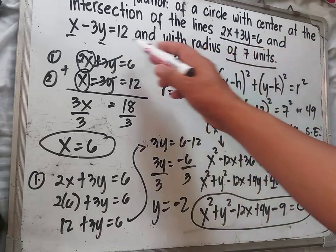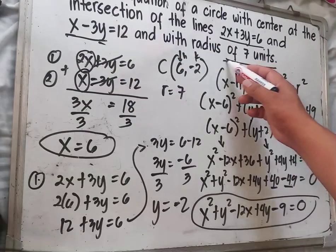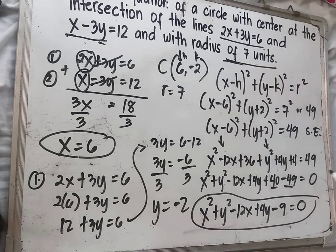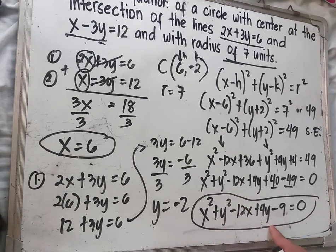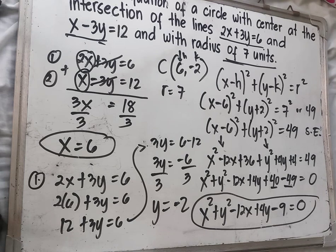So the general equation is x squared plus y squared minus 12x plus 4y minus 9 equals 0. Thank you everyone and God bless.